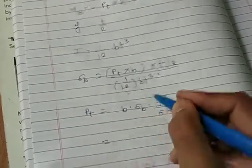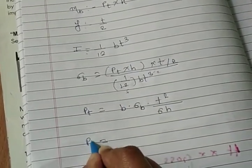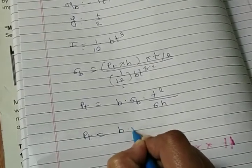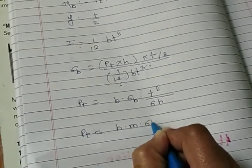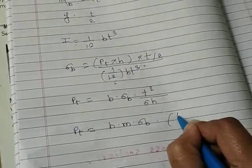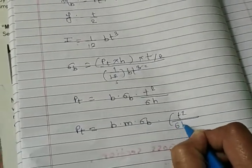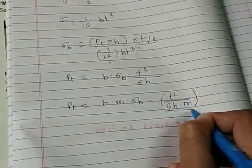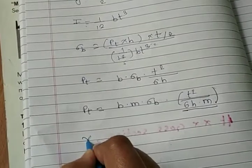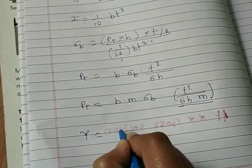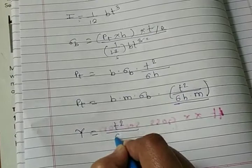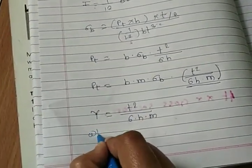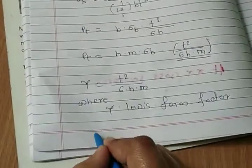Let's divide and multiply by m on right side. So we get b m sigma b into t square divided by 6 h m. Now this t square divided by 6 h m is nothing but the capital Y, that is Lewis form factor.